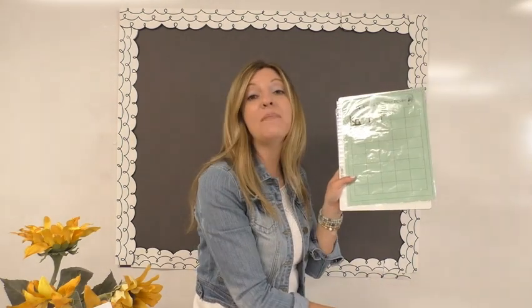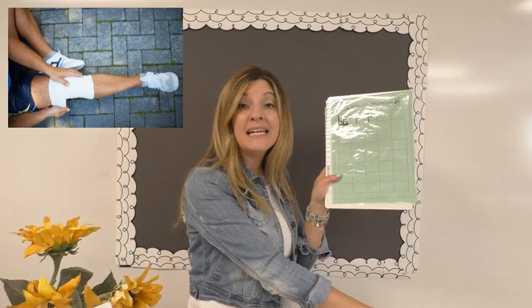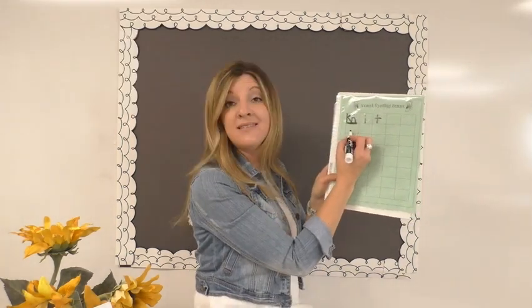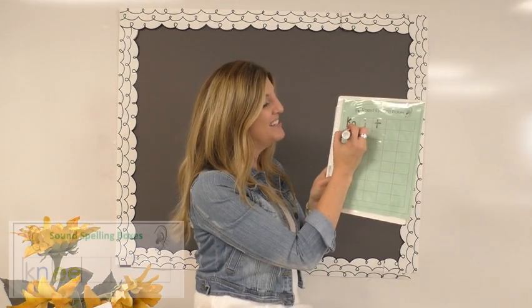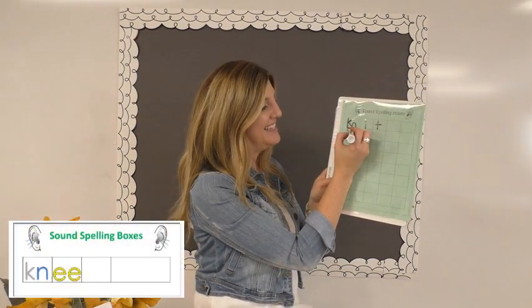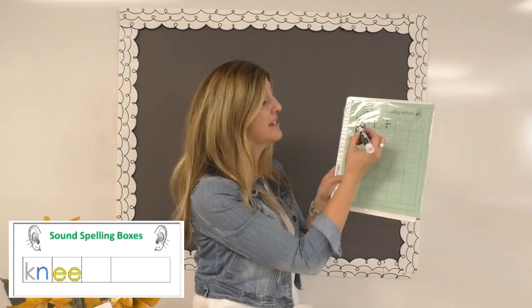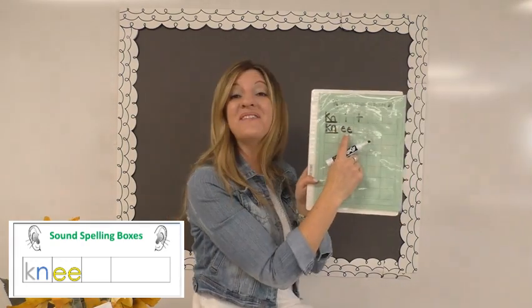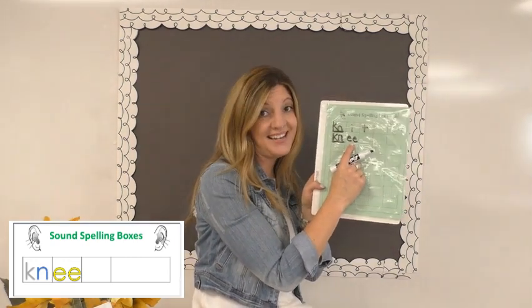Let's try 'knee.' I fell and scraped my knee on the sidewalk. Knee is N-E, and I know that knee also has the silent digraph K-N. It makes one sound, so I put it in one sound box. Knee — and I have my vowel team EE representing the long E sound.